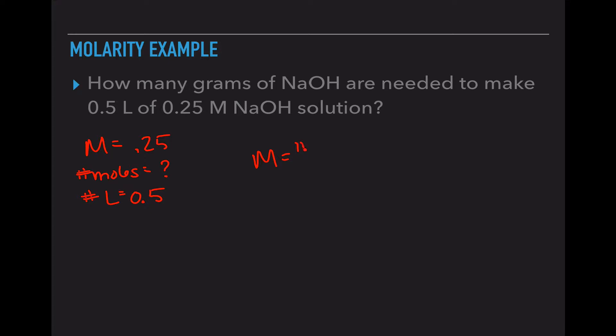If we use our equation number of moles divided by number of liters, we have 0.25 equals our unknown divided by 0.5. When we multiply both sides by 0.5, our number of moles present ends up being 0.125 moles.